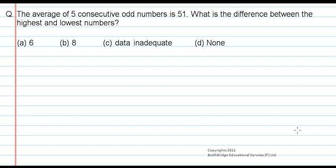Now, let us work out a problem. The average of five consecutive odd numbers is 51. What is the difference between the highest and lowest numbers?